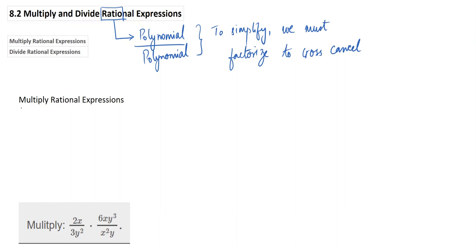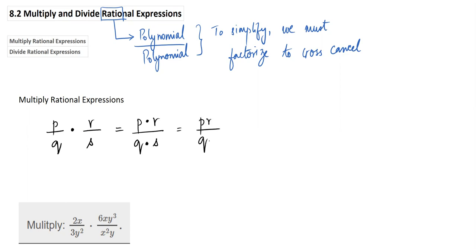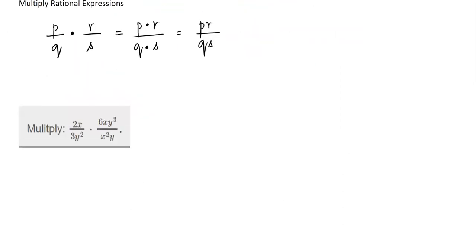If you have two fractions P over Q times R over S, the rule is to multiply them across: it becomes PR over QS. The same rule applies here — very comforting to know. Just remember we have to factorize when we need to simplify. So factorize in order to cross-cancel. Let's look at the first problem: 2x over 3y² times 6xy³ over x²y.